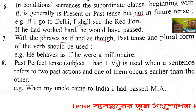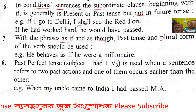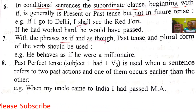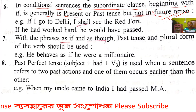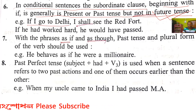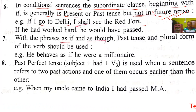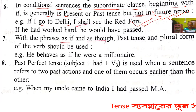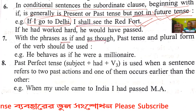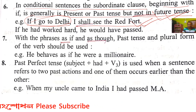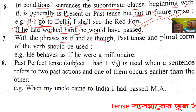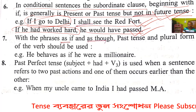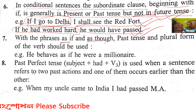Rule 6: In conditional sentences — sartobachak sentence — where the subordinate clause begins with 'if', generally its verb is in present or past tense, but not in future tense. Example: 'If I go to Delhi, I shall see Red Fort.' The 'if' clause — subordinate clause — uses present tense, not future tense.